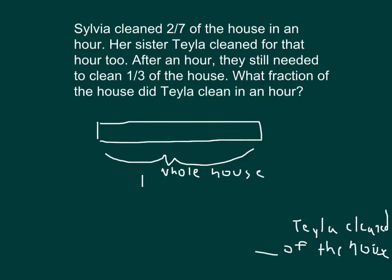We also know some other things we can label our diagram with. We know that Sylvia cleaned two-sevenths of the house — two out of seven parts. We'll label that two-sevenths for Sylvia. We also know that after an hour they still needed to clean one-third of the house, so we'll mark that third as what's left.